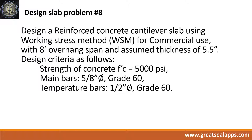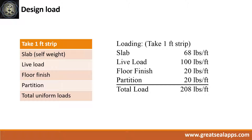Design a reinforced concrete cantilever slab using the working stress method for commercial use with an 8-foot overhang span and assumed thickness of 5.5 inches. Design criteria: strength of concrete 5,000 PSI; main bars, 5/8-inch diameter bar, grade 60; temperature bars, 1/2-inch diameter bar, grade 60. The load for a 5.5-inch thick slab is 68 pounds per foot, commercial live load is 100 pounds per foot, floor finish is 20 pounds per foot, and partition is 20 pounds per foot, for a total load of 208 pounds per foot.